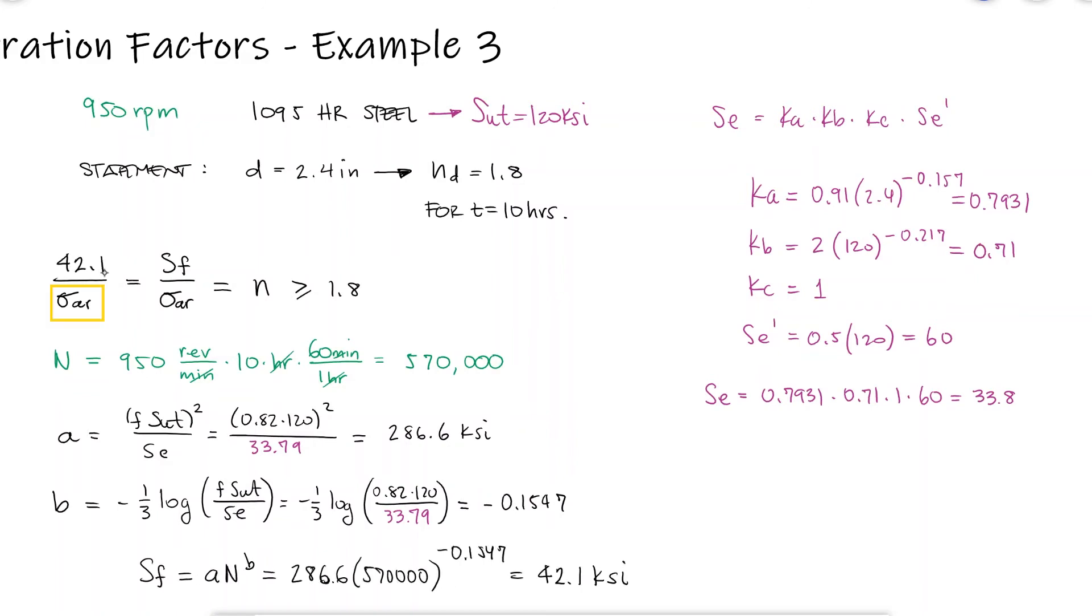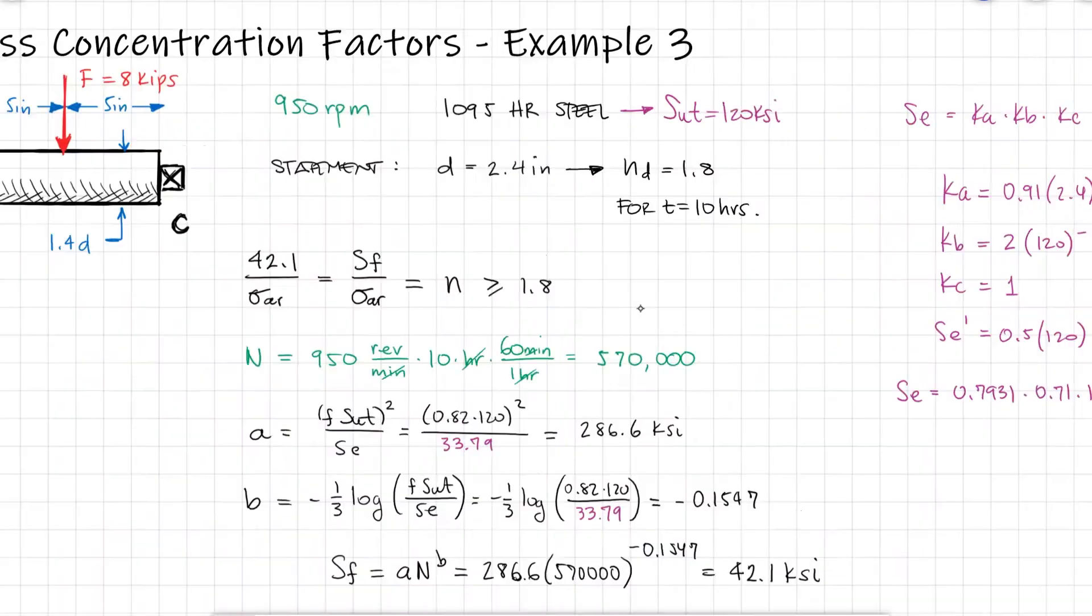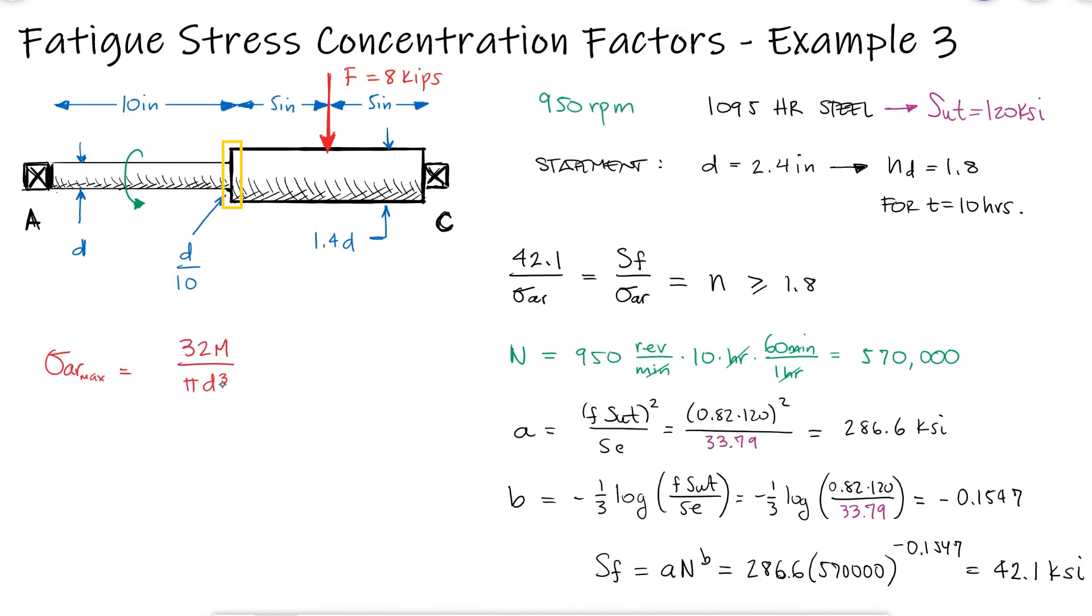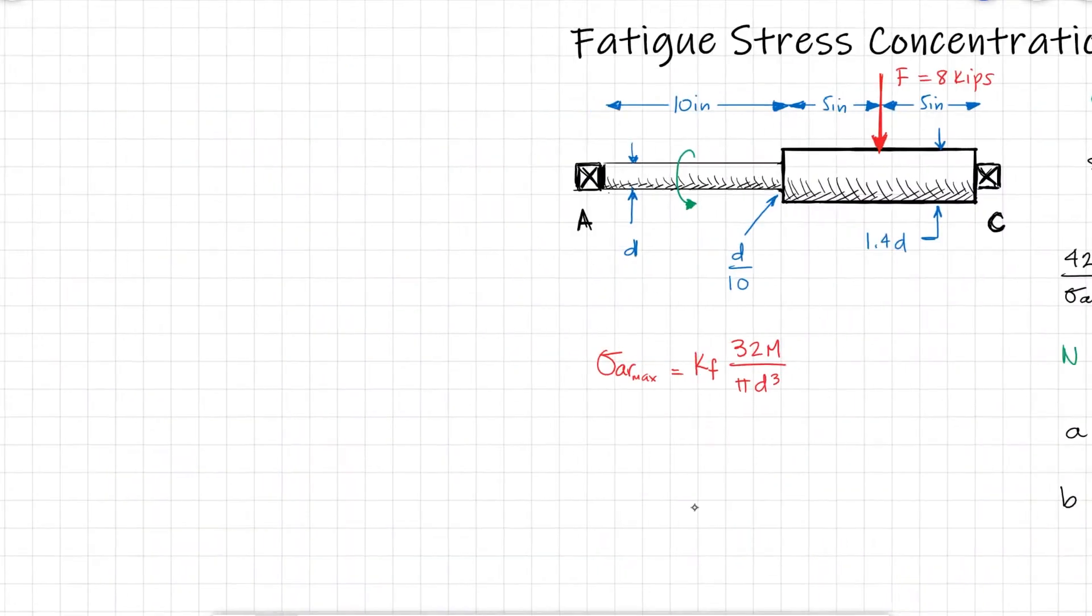The maximum alternating bending stress will occur at the fillet where there's a stress concentration, and remember that the maximum stress does not necessarily happen where the moment is maximum. A smaller diameter and a stress concentration can make up for the fact that the moment is not the maximum.